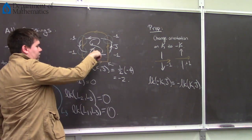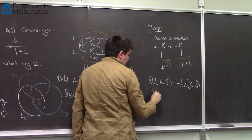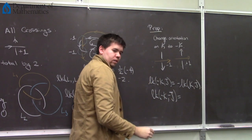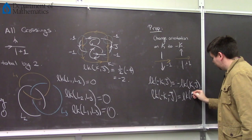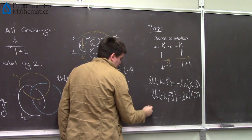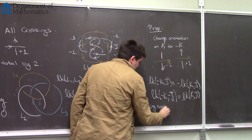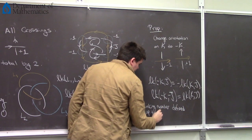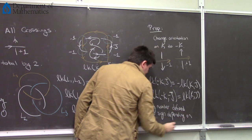You could say the linking number between minus k and j would be negative the linking number between k and j. So up to orientation, these are well defined up to sign. If I had changed the orientation on one of these guys, it would change it from negative two to positive two. If I changed the orientation of both k and j, it would flip twice — negative negative — which is the regular linking number between k and j.